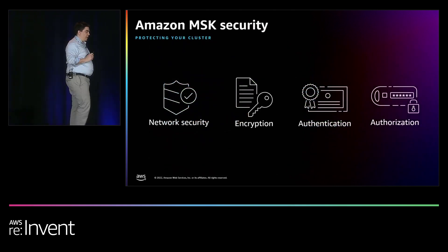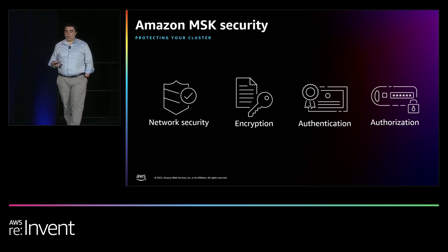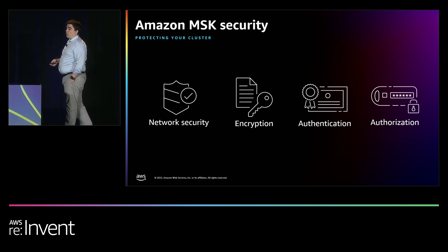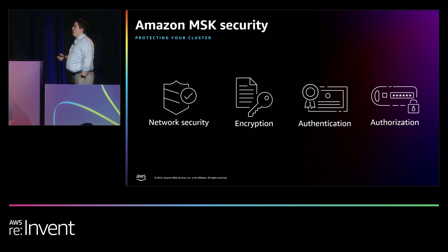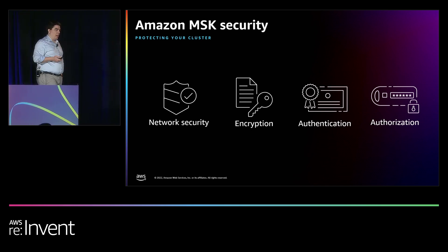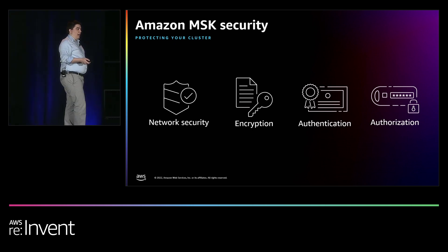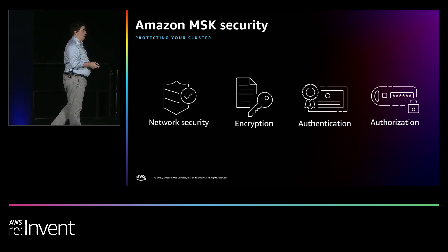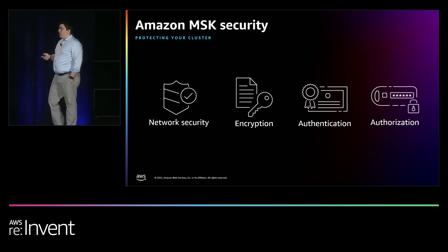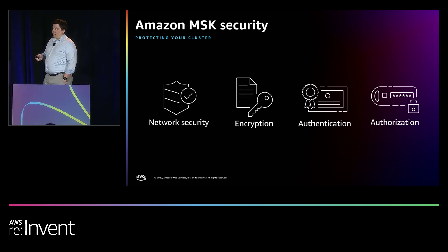Before monitoring, let's cover security. We already discussed network security through network ACLs and security groups. For encryption, MSK offers two methods: encryption at rest using KMS to encrypt EBS volumes, and encryption in transit using TLS — for interbroker communication, intercluster communication, and client-to-broker communication. For authentication, this talk focuses on digital certificates. Authorization is handled through Kafka ACLs. These are the four levers for securing your MSK cluster: network security, encryption at rest, encryption in transit, and authentication and authorization.